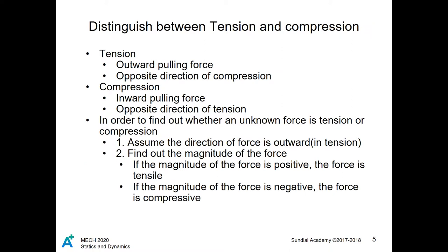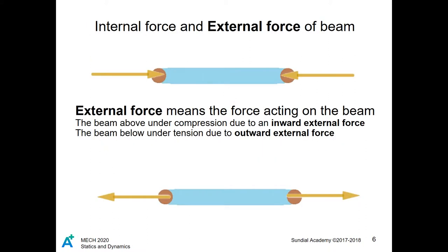Before we analyze trusses, we should detail what information is useful to us. A beam in compression has external forces pushing into the ends of the beam, and the internal forces of the beam are pushing away from the center of the beam. A beam in tension has external forces pulling the ends of the beam, while the internal forces of the beam are pulling into the center of the beam. Here we have a graphic on some of the more confusing terms that come up in statics discussion, especially to people who are not well versed in the field.